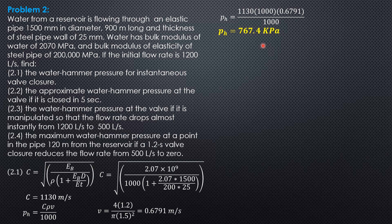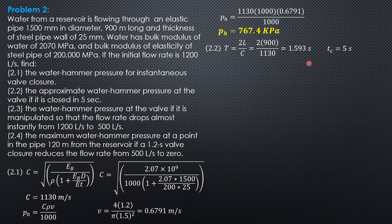For Part B, the approximate water hammer pressure at the valve if closed in 5 seconds. The actual time of closure is 5 seconds. The time for the pressure wave to travel a round trip is 2L/C = 2 × 900 / 1,130 = 1.593 seconds. Since actual closure time of 5 seconds is greater than 1.593 seconds, this is a slow closure. By proportion: pH' / 1.593 = 764.4 / 5. Therefore pH' = 244.5 kilopascals.